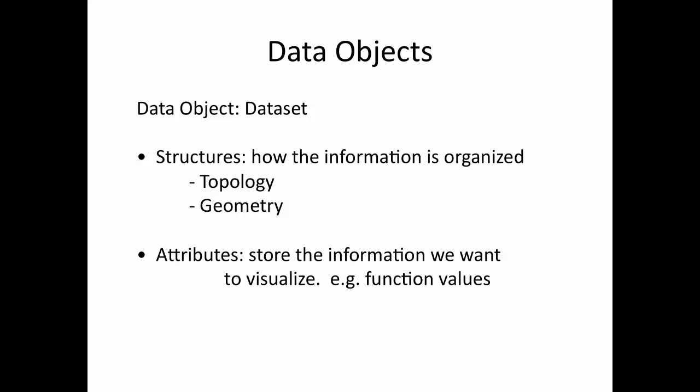Now let's look at VTK data objects. The VTK data objects are actually the datasets. Previously we talked about the VTK file format — how VTK describes scientific datasets. The data objects of VTK can be divided into structures and attributes. The structures are mainly about how the information is organized — for example, the mesh, the cells, the vertices, etc. The attributes of the VTK data objects are the information produced by the simulation, and oftentimes they are what we want to visualize — for example, pressure and temperature in a numerical simulation.